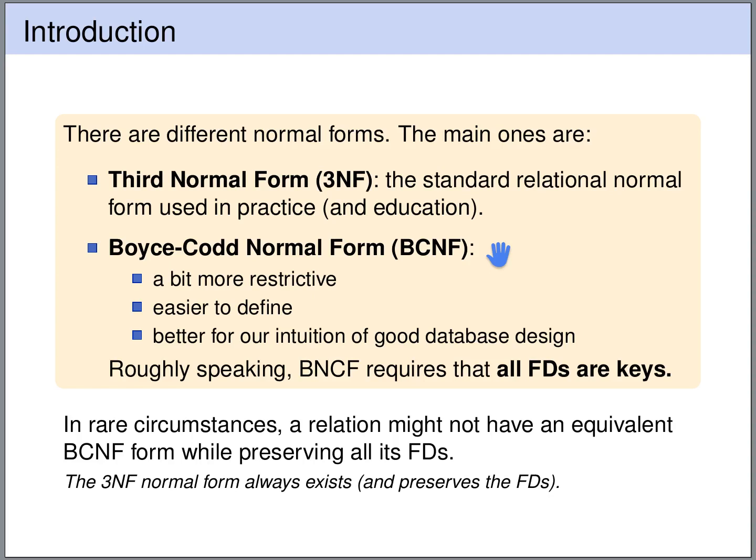Roughly speaking, the Boyce-Codd normal form requires that every functional dependency is a key. The advantage of the third normal form is that in very rare circumstances it can happen that we cannot transform a relational schema into Boyce-Codd normal form while preserving all the functional dependencies — some functional dependencies might get lost. For the third normal form, this transformation is always possible while preserving all functional dependencies.